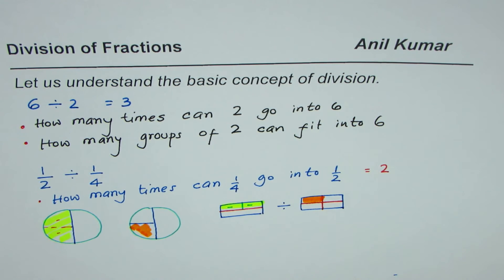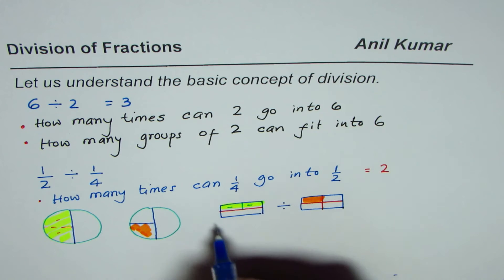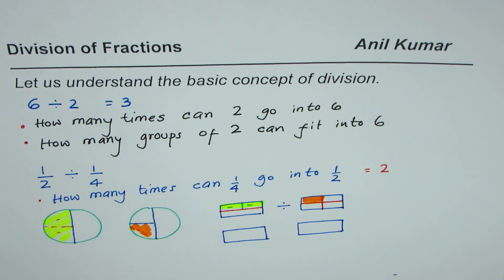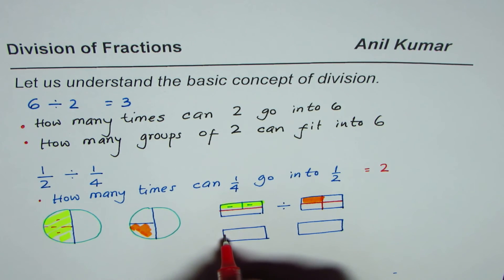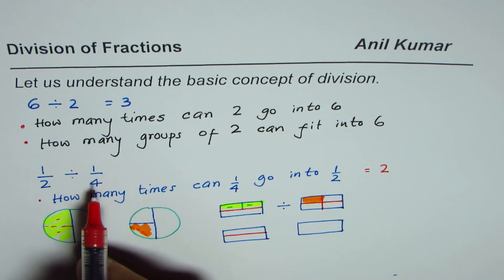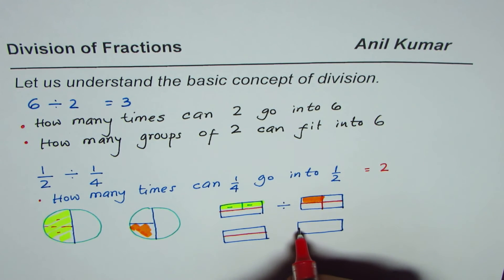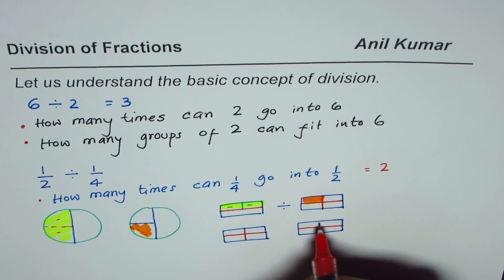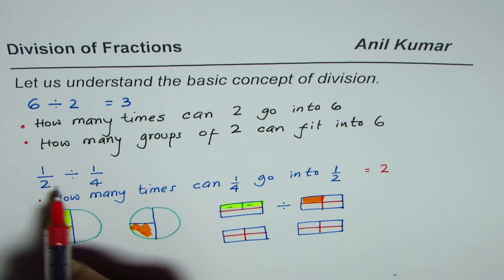Now, it becomes easier to answer this question if we take these two rectangles with the same number of rows and columns. So, we are again working on half divided by 1 fourth. To represent half, we will just do half of it. But since we have to divide by 1 fourth, let me break up these rectangles into four parts. The reason being that 4 is the lowest common denominator.